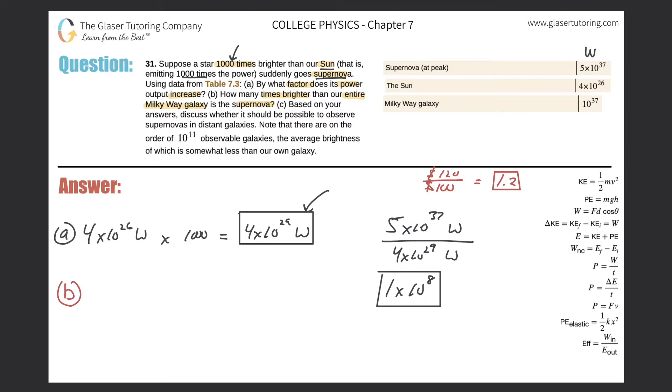In order to do something like this, we're essentially doing the same process. We're trying to find out how many times brighter the supernova is when compared to the Milky Way. Therefore, it's going to be the supernova's value over the Milky Way. Same thing like I did for letter A.